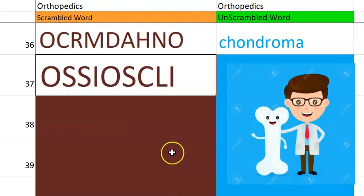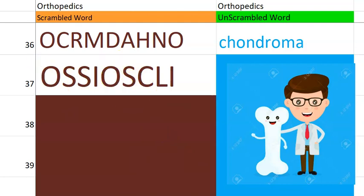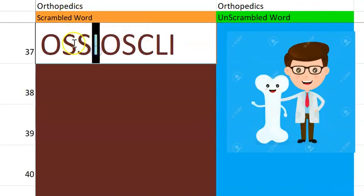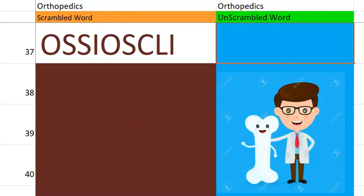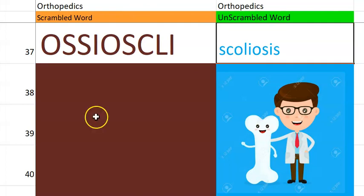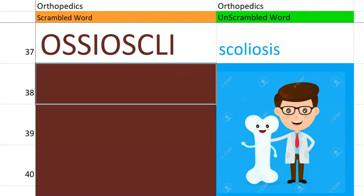37th one now. This one is beginning with S, something to do with the spine again. So it is scoliosis — basically there is sideways curvature of the spine.